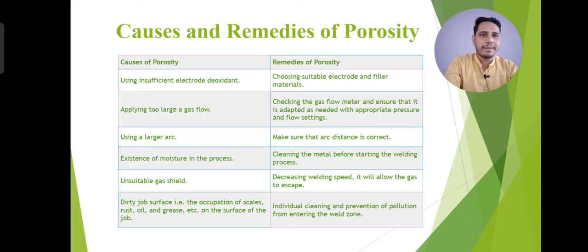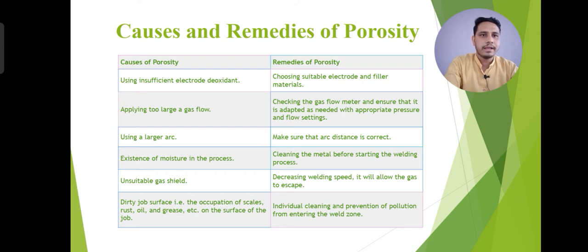There are some causes and remedies responsible for porosity defects. Using insufficient electrode diameter is one cause. Remedies include applying adequate gas flow — check the gas flow meter and ensure it is set with appropriate pressure and flow settings. Using a larger arc is also a cause of porosity, so the welder and operator should make sure the arc distance is correct and use the proper arc distance. Existence of moisture in the process is another cause, so decreasing welding speed will allow the gases to escape. Dirty job surfaces — including scale, rust, and greases on the metal surface — also contribute.